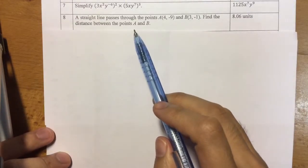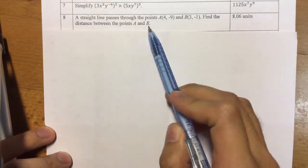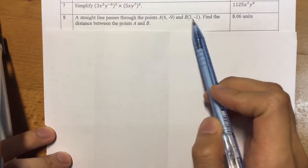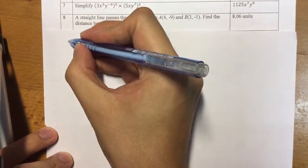This is a question on coordinate geometry and how to find the distance between two points. Given points A and B with x and y coordinates, the solution is actually quite simple.